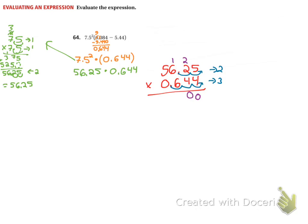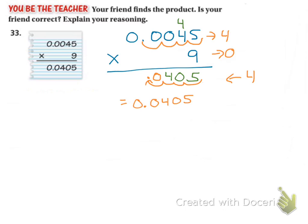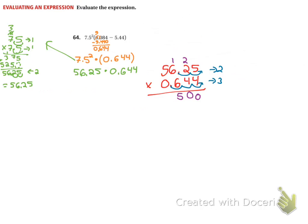4 times 6 is 24. Plus 1 is 25. Carry my 2. Oops. And 4 times 5 is 20. Plus 2 is 22. Cross this off.